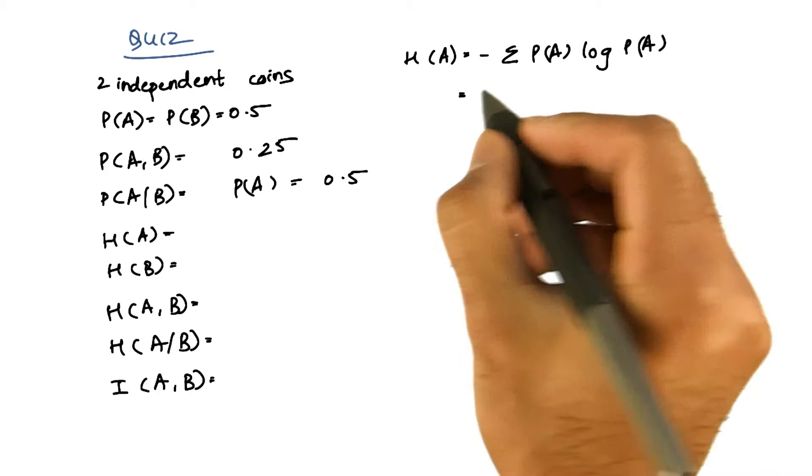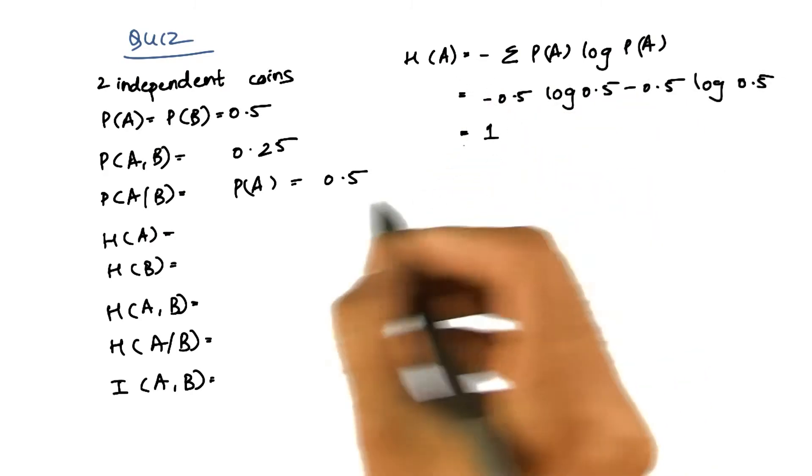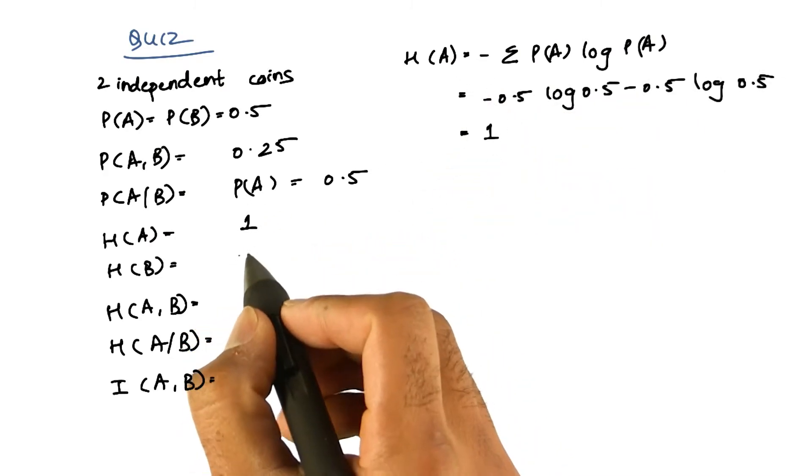If we expand on this, we get the entropy of A as 1. Similarly, the entropy of B is also 1.